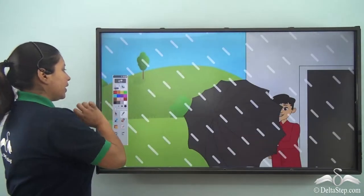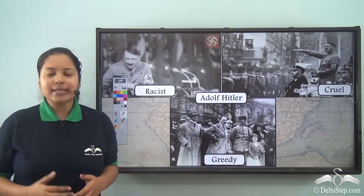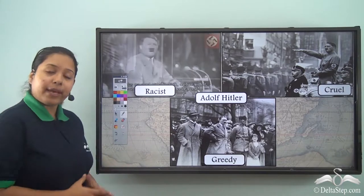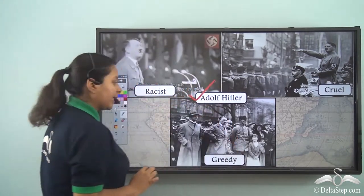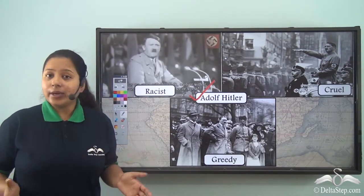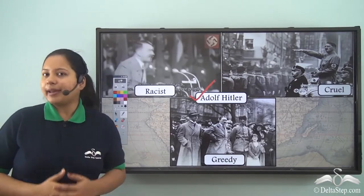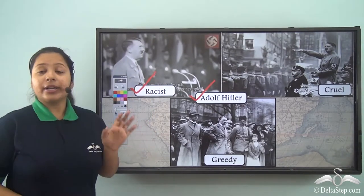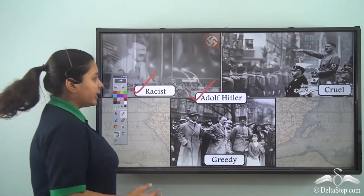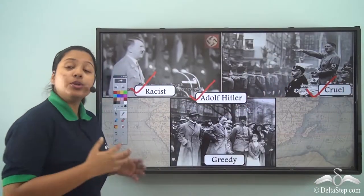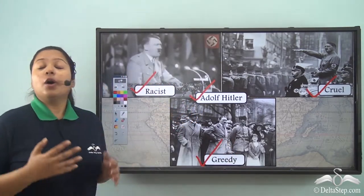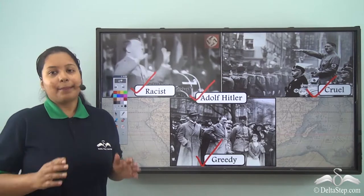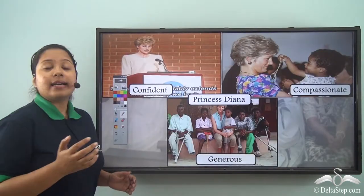Not only that, history also helps us to know about different characteristics of people. Over here we see a person who was very famous — his name is Adolf Hitler. He was a leader, but he was known for his bad characteristics. He was a racist, and under his rule many Jews were killed. He was cruel because he used to torture people, and he was greedy for getting more and more power. So these were the characteristics of Adolf Hitler. He was a leader, but people hated him.